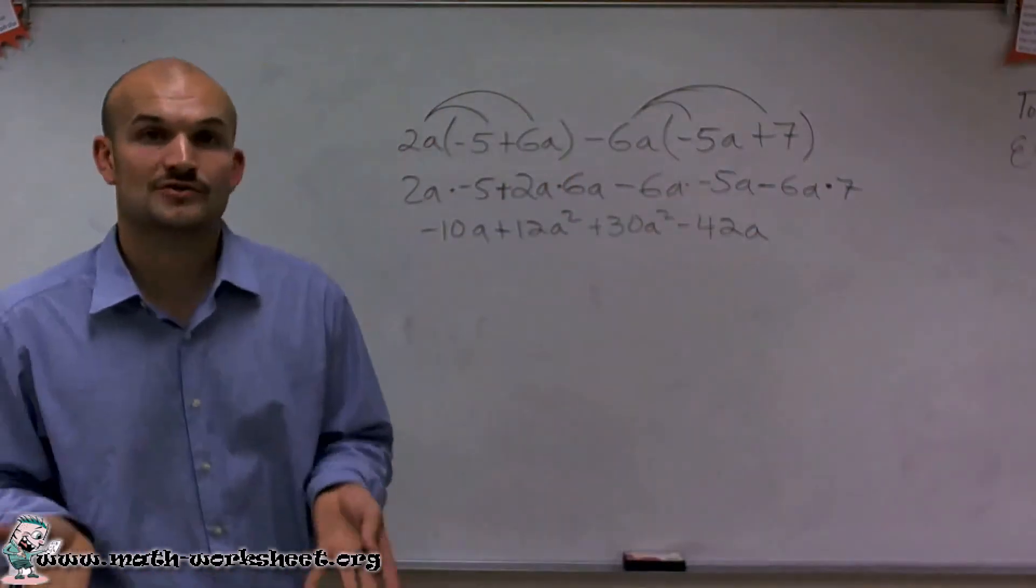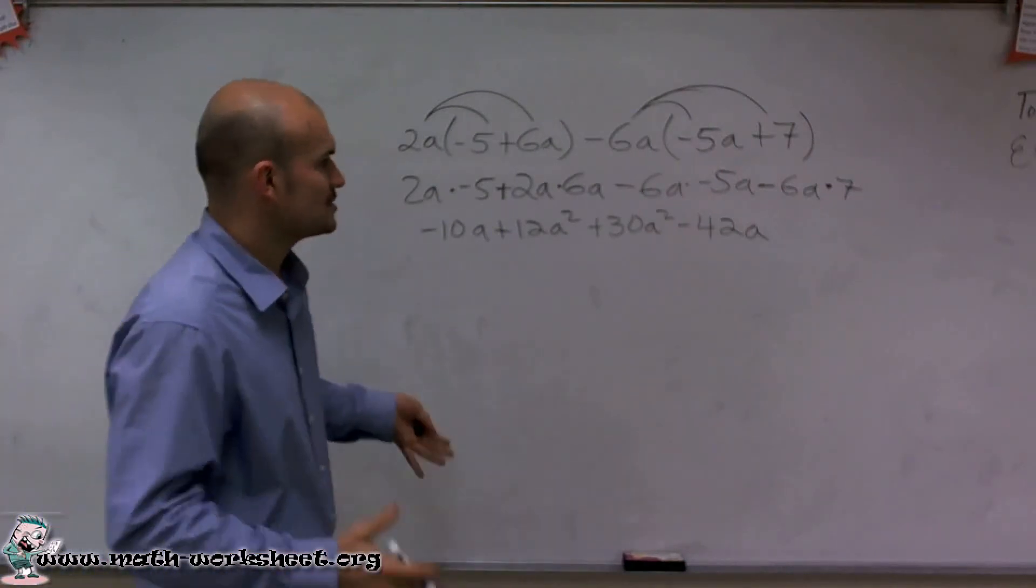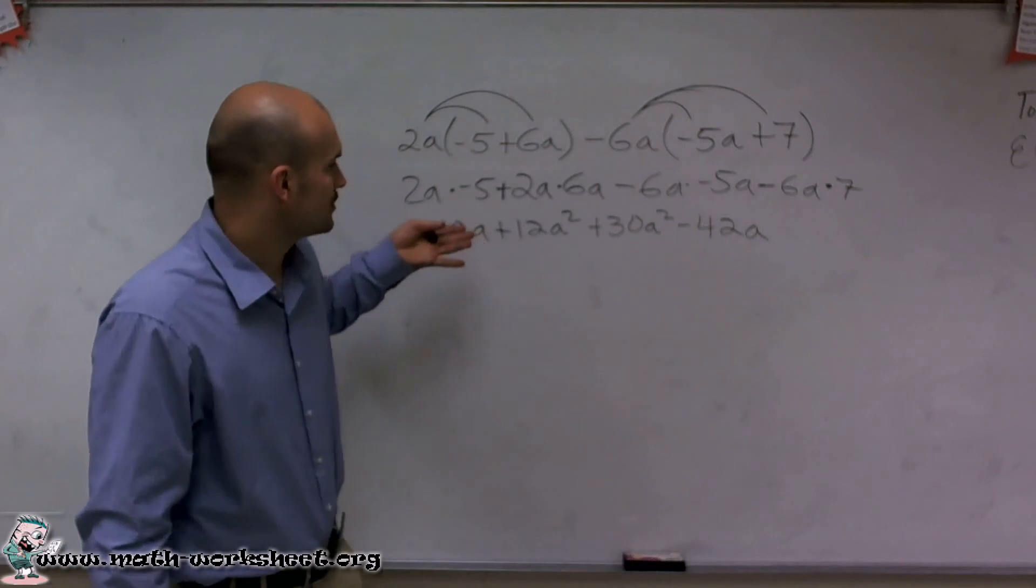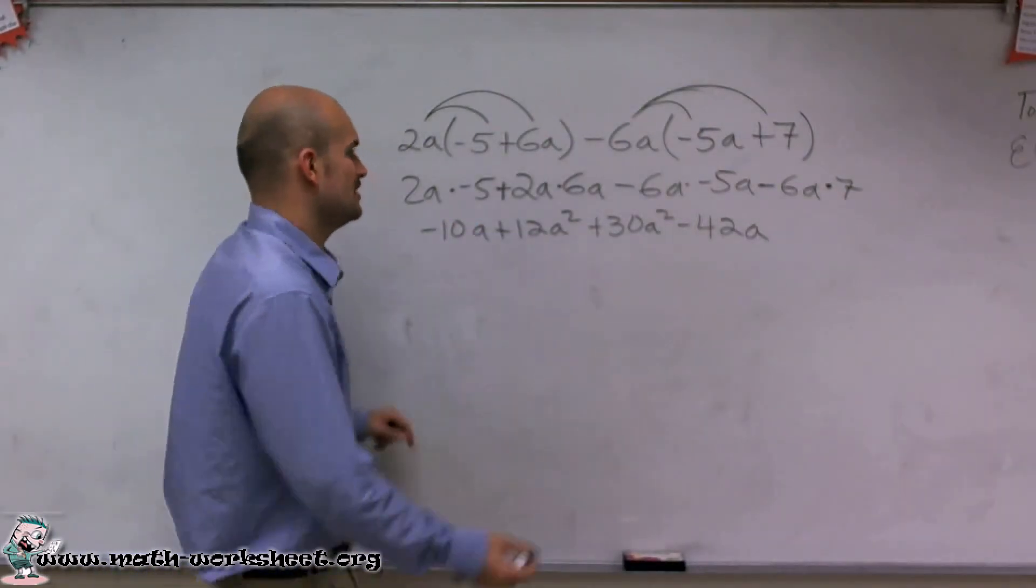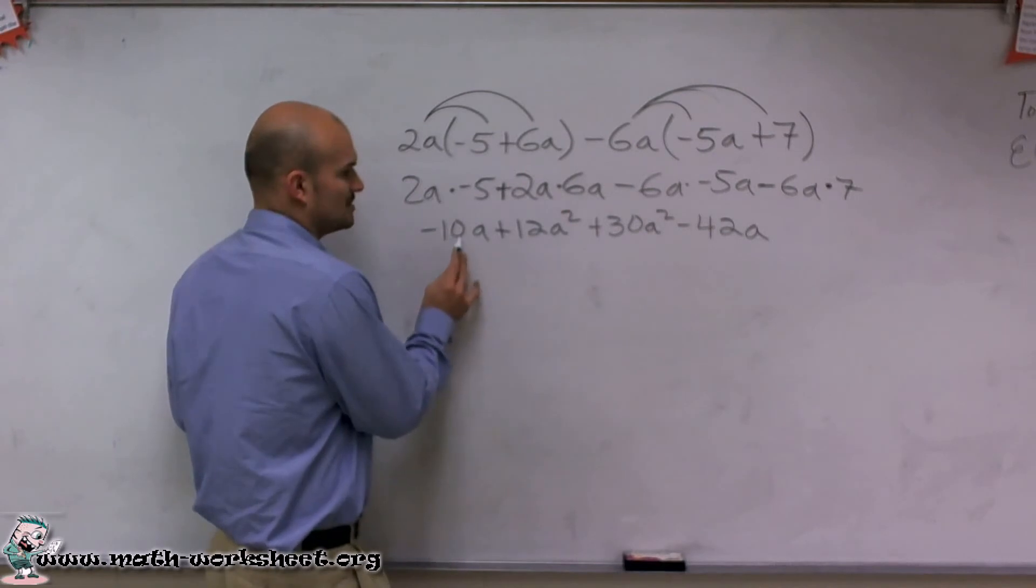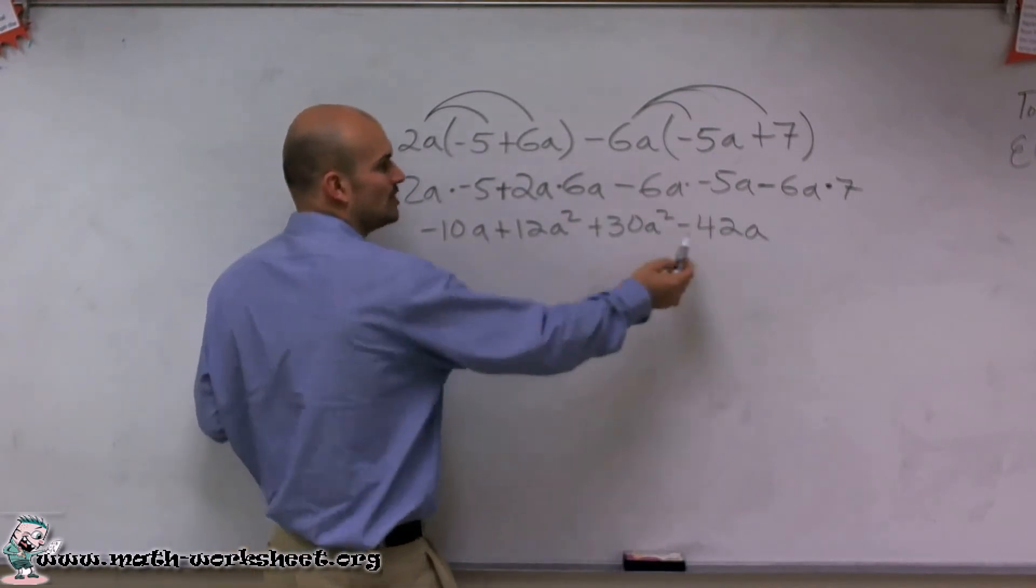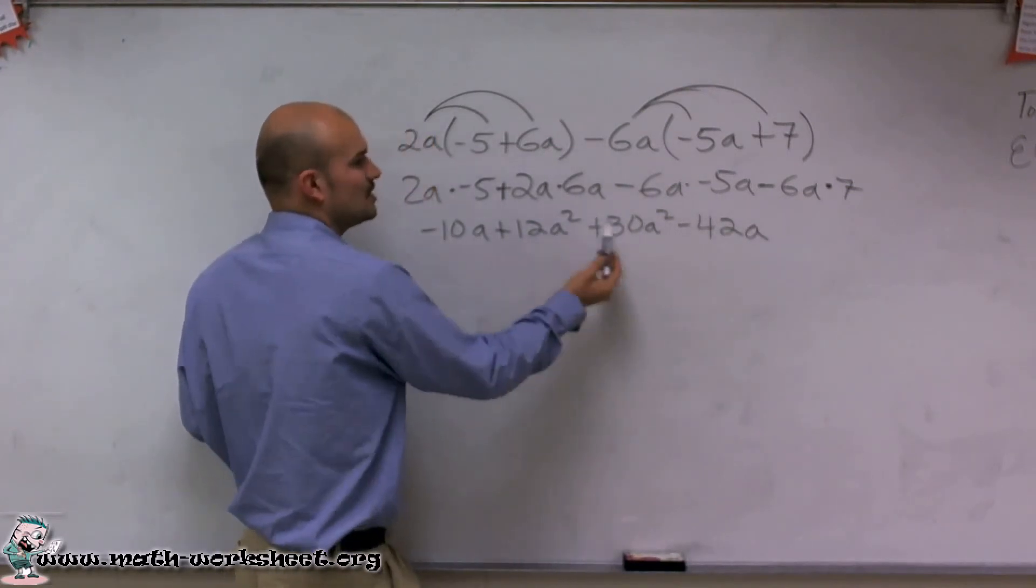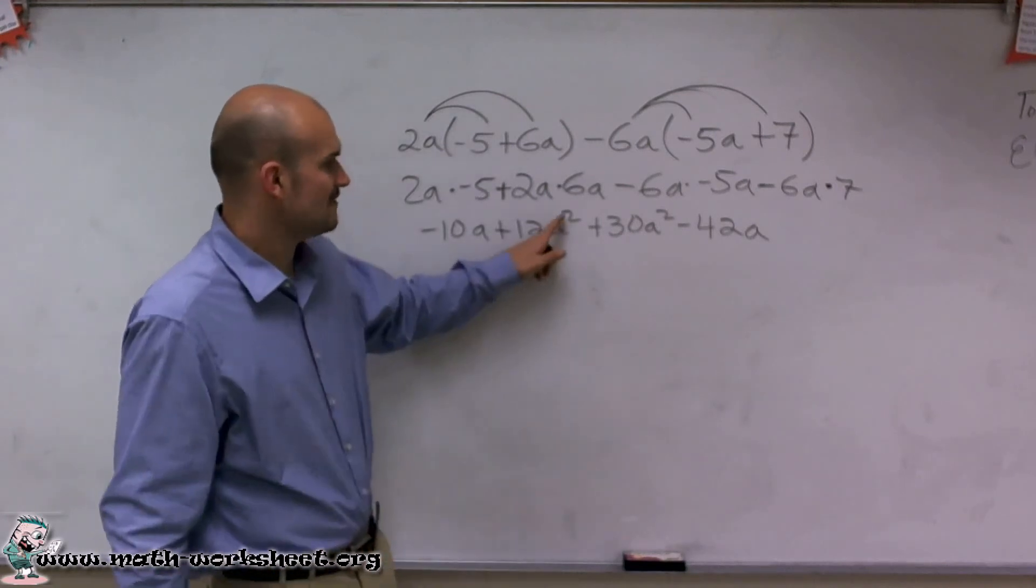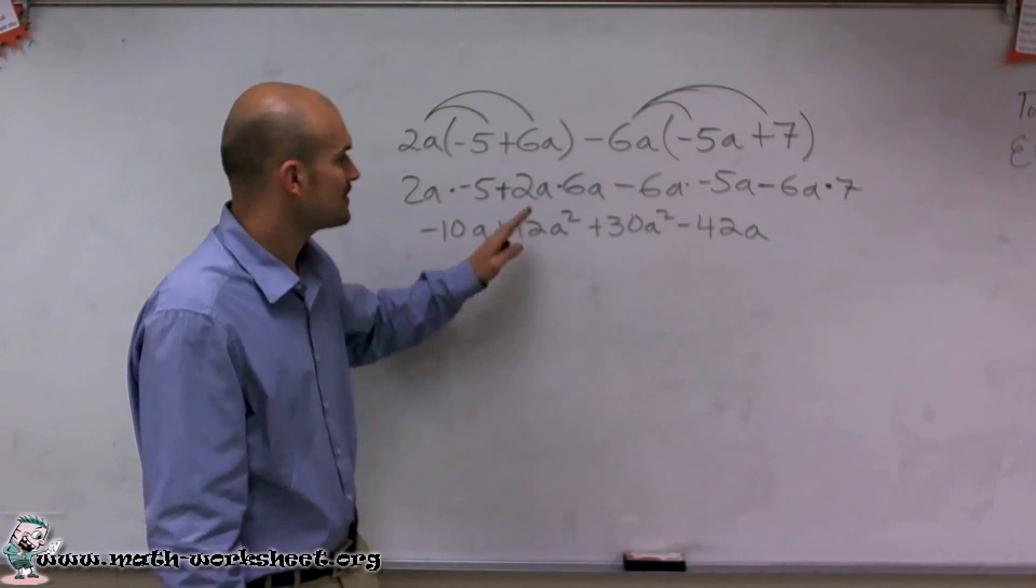Now the next thing we need to do is combine like terms. Remember, like terms are terms that have exactly the same factors. These factors have numbers and a, so I can combine this only with factors with numbers and a. You can notice that these terms don't have the same type of factors. These have a squared, two factors of a, where these only have one a.